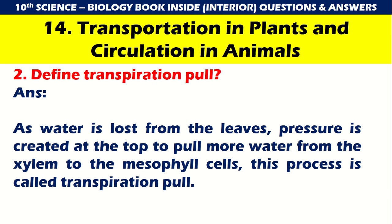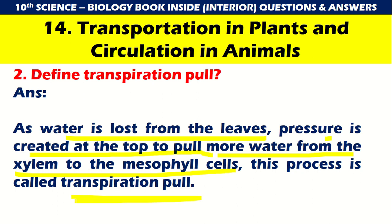Transportation in plants and circulation in animals, second question: Transpiration pull. As water is lost from the leaves, pressure is created at the top to pull more water from the xylem to mesophyll cells. This process is called transpiration pull.